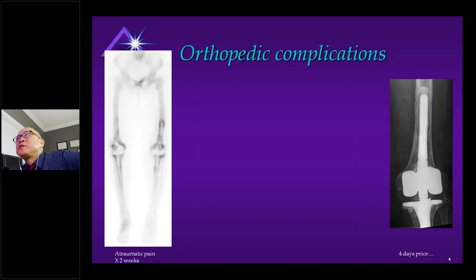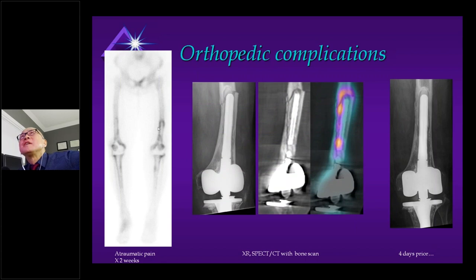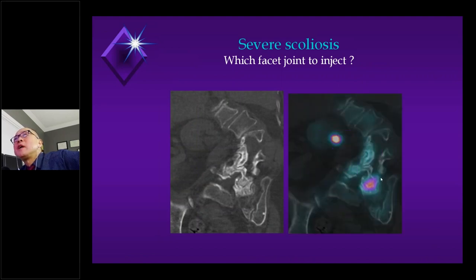Atraumatic pain, two weeks, with a radiograph from four days prior negative for fracture. I have to be honest — I didn't recognize the fracture on the bone scan, but SPECT-CT told me there is one. When I'm on injection duty with multi-level facet arthrosis on SPECT-CT, having SPECT-CT means I know I only really need to go after just that one joint.